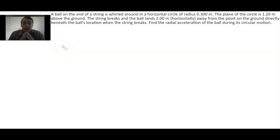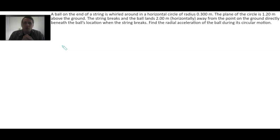Hello, and I would like to perform a centripetal acceleration calculation mixed with two-dimensional kinematics, namely a projectile problem. It says a ball on the end of a string is whirled around in a horizontal circle of radius 0.300 meters. The plane of the circle is 1.20 meters above the ground. The string breaks and the ball lands 2.00 meters horizontally away from the point on the ground directly beneath the ball's location when the string breaks. Find the radial acceleration of the ball during its circular motion.